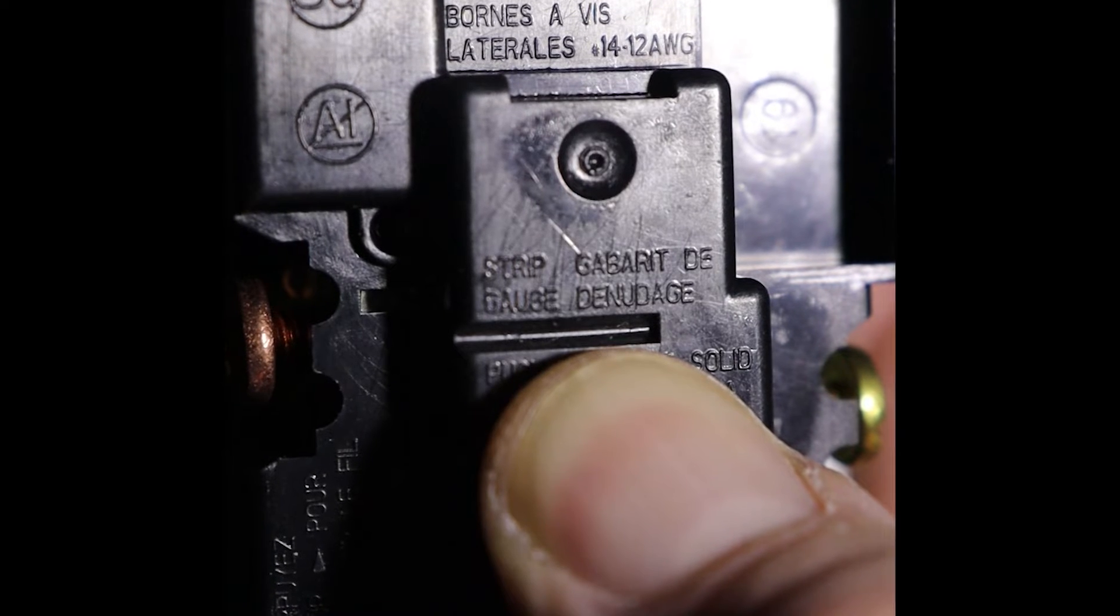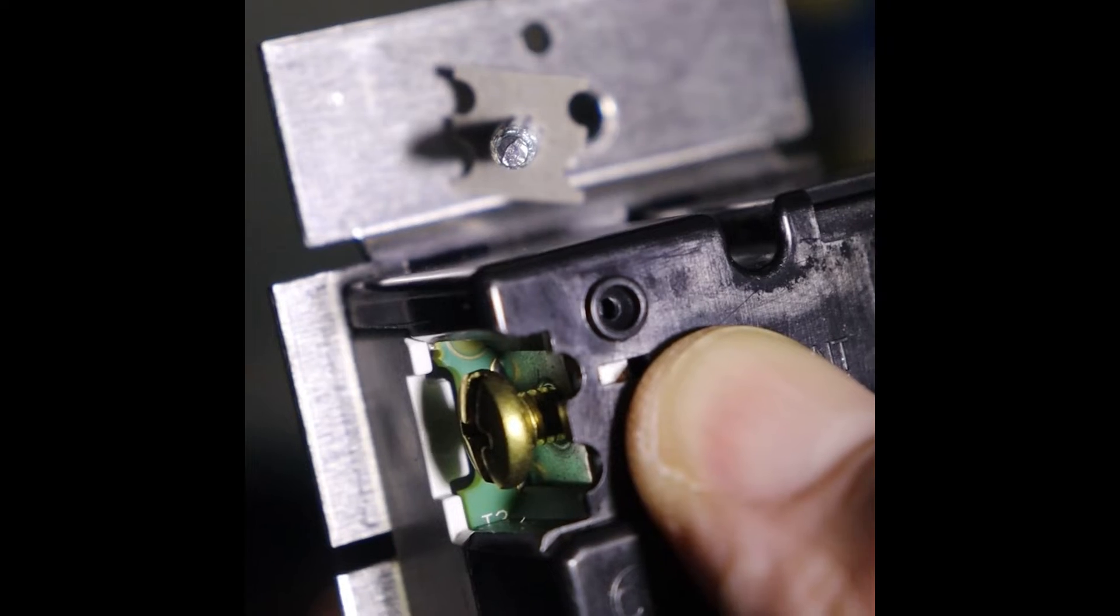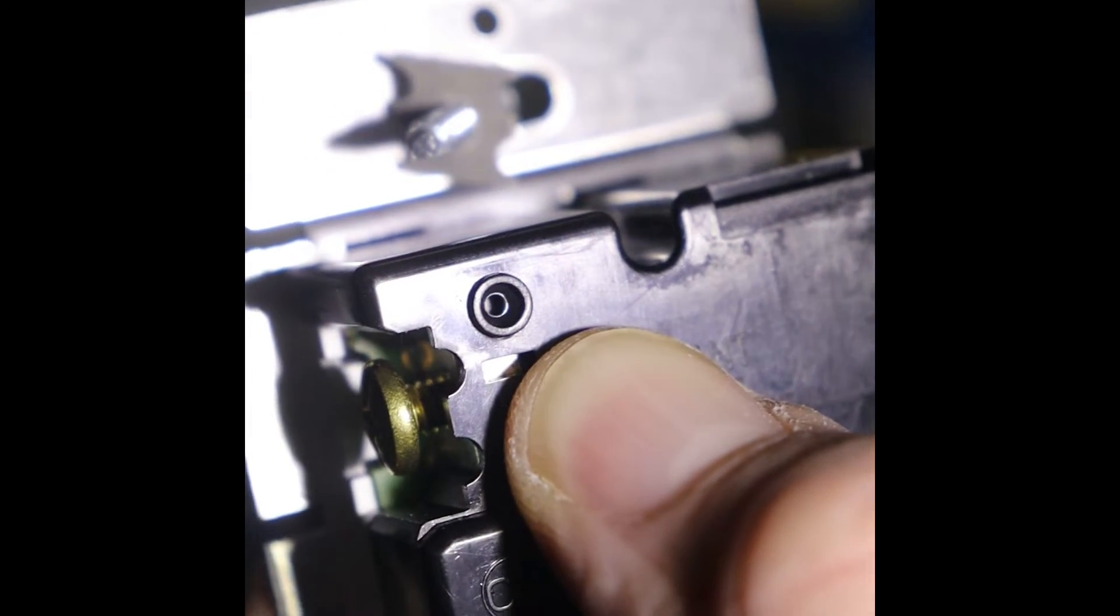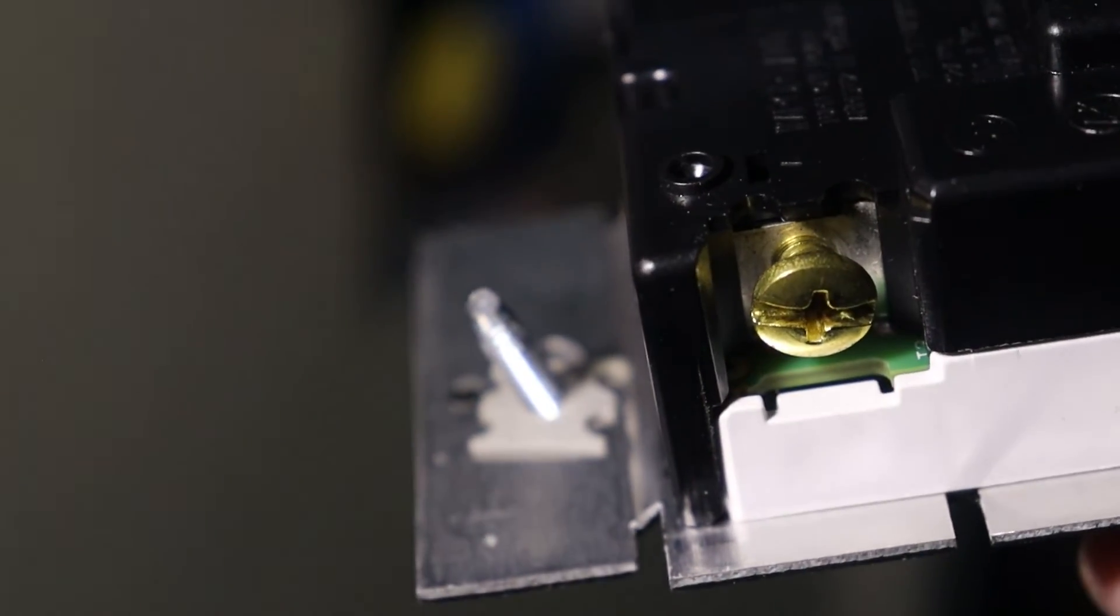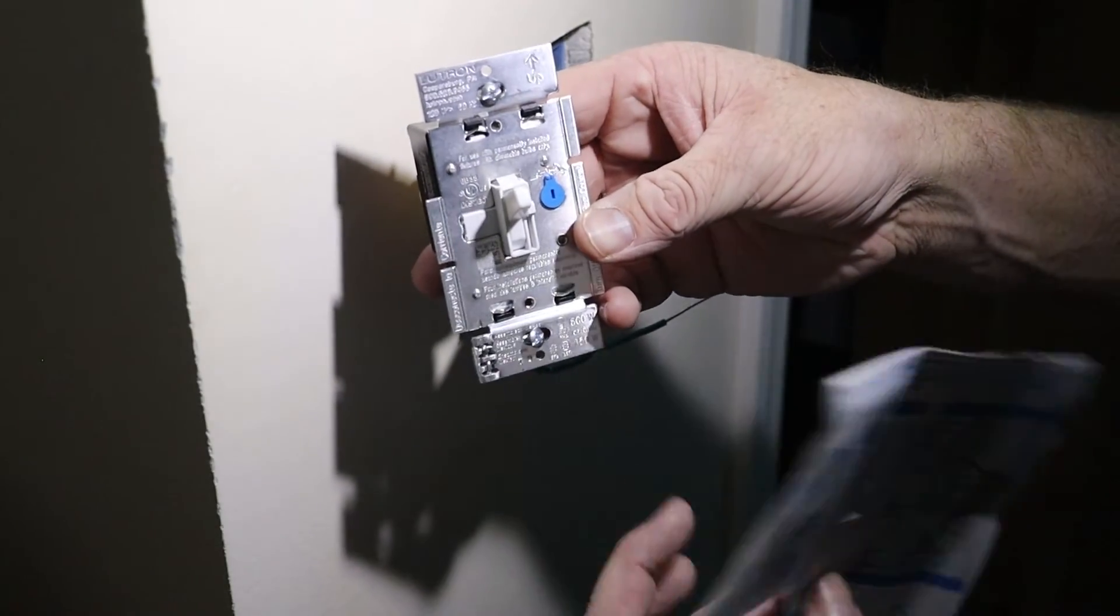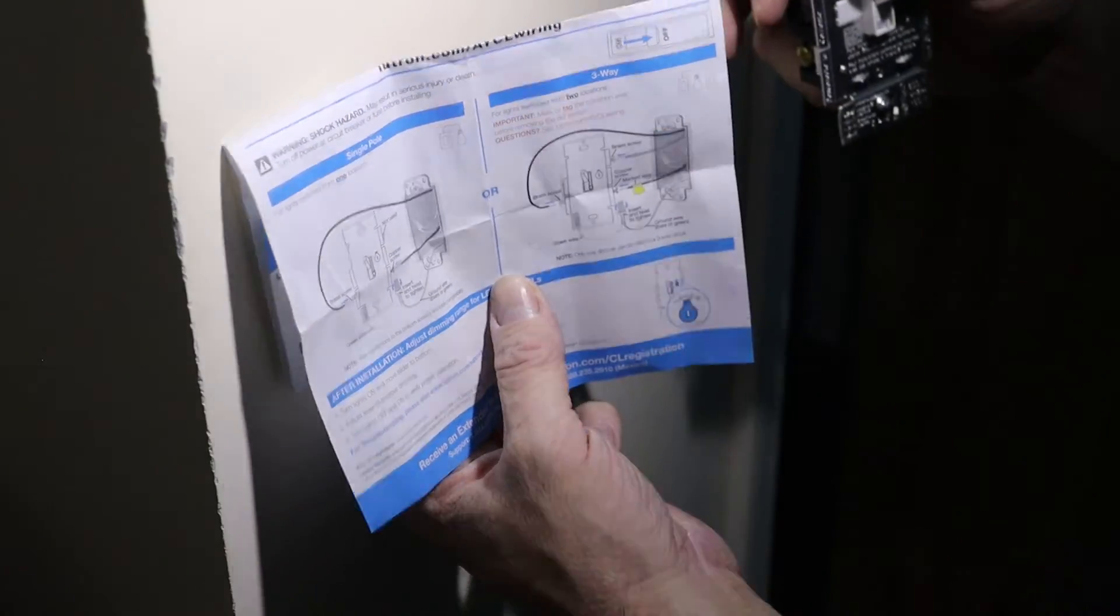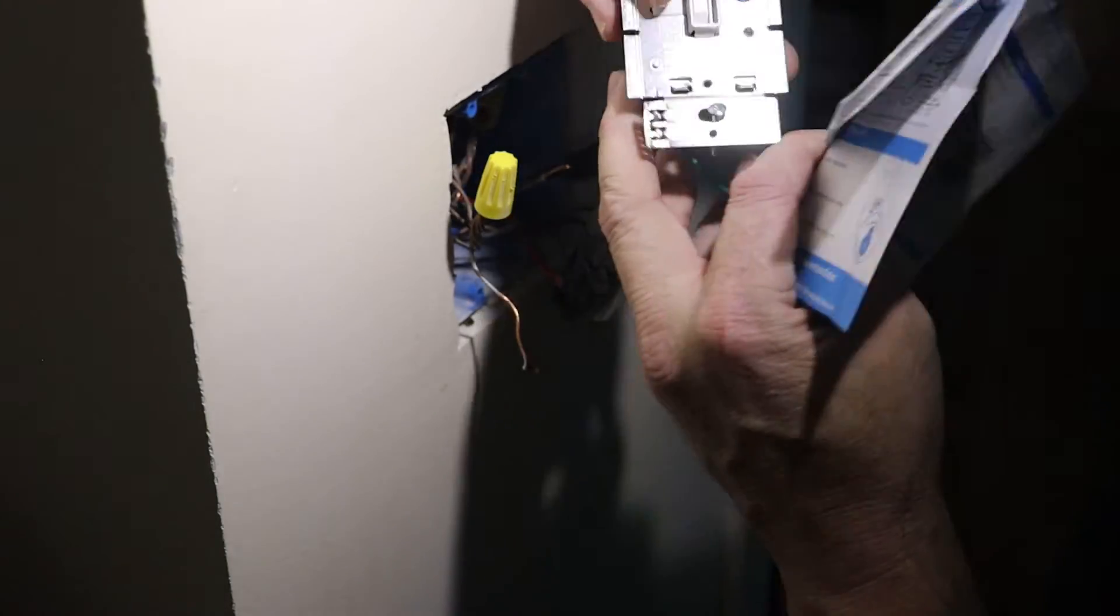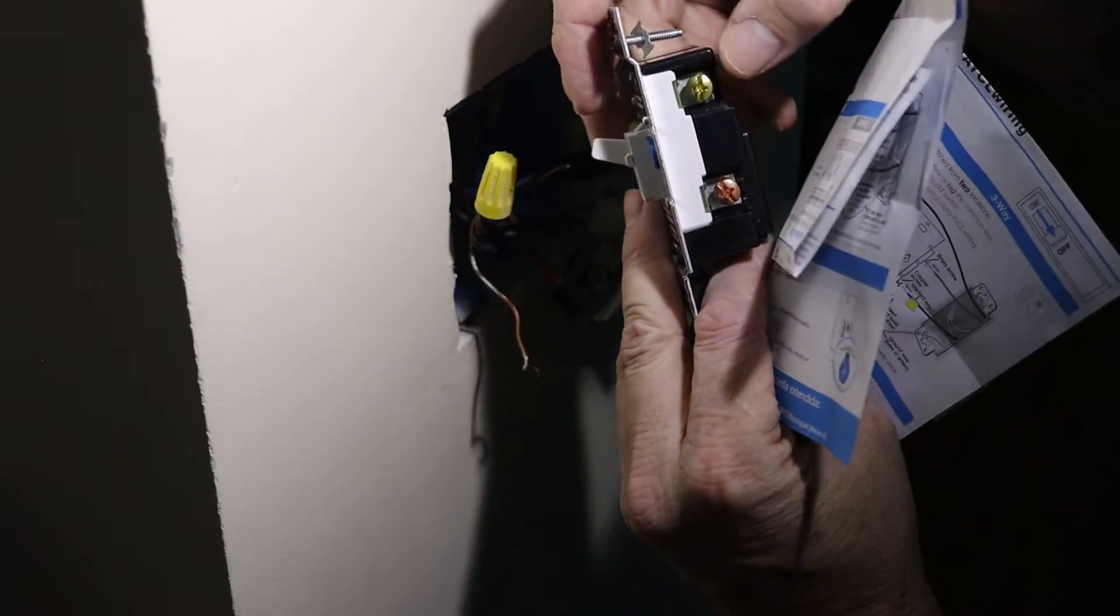The switch has a strip gauge, which shows how far to strip the wire that will be pushed into the switch. And then there's these little holes by the screws, which will just push the copper wire into, and it just holds the wire. The holes are only for 14 gauge wire. If you use 12 gauge wire, you're going to have to use the screw. So these dimmer switches do have an up and down position. So here's the up position. And according to the diagram and our instructions, one of the wires is going to go in this screw, and another wire is going to go in this screw. So this top screw won't be used.